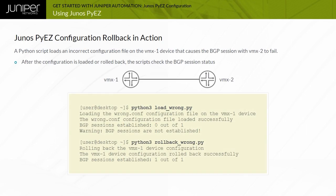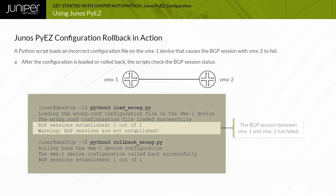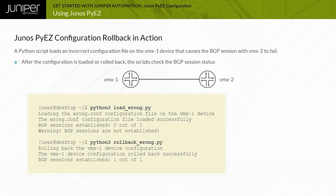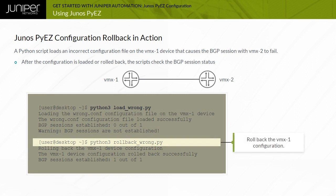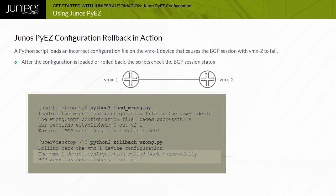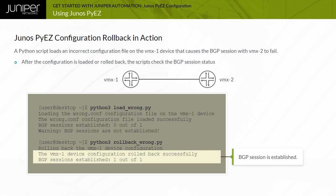This example uses a Python script to purposely load an incorrect configuration on the vmx1 device, causing the BGP session with the vmx2 device to fail. Another Python script is then run which performs a configuration rollback operation on the vmx1 device that reestablishes the BGP session.